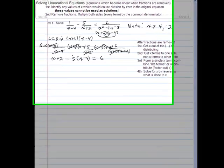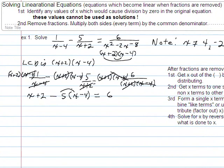So I'm going to distribute that negative five here and I'm going to distribute that negative five here. So I get x plus two minus five x plus twenty is equal to six. I didn't make that a very good x, so let me make a better x there.